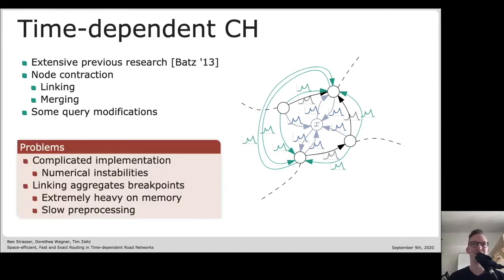This time-dependent contraction hierarchies do work rather well. They achieve fast queries and they achieve exactness. However, they have one big problem besides being quite complicated to implement. The main problem is that linking two such travel time functions together generates a new travel time function which has as many breakpoints as the two input functions combined. Since shortcuts in contraction hierarchies on high levels might go over paths of lengths of thousands of arcs, we suddenly end up with travel time functions with tens of thousands of breakpoints. This becomes a problem with memory consumption - actually becomes prohibitive on continental sized instances such that you need several hundreds of gigabytes to perform queries.